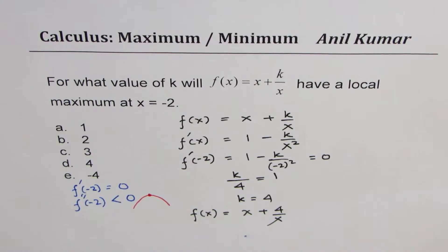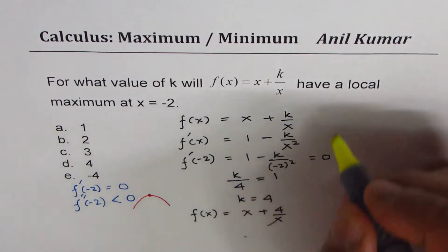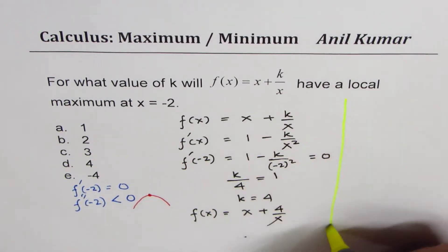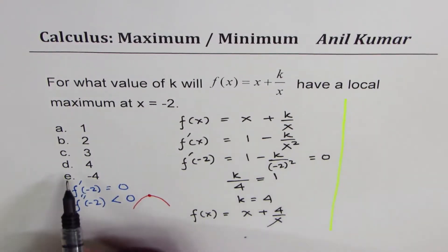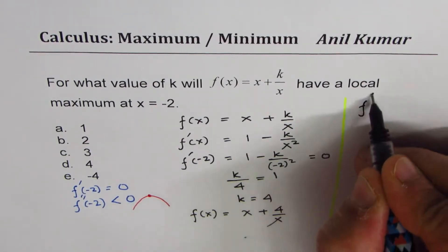Now let us confirm if really it is a local maximum. This is kind of important. We could actually work with a different value also. There is a -4 also here. We know for sure 90% it is plus 4. So to confirm, let us find the second derivative of this function.